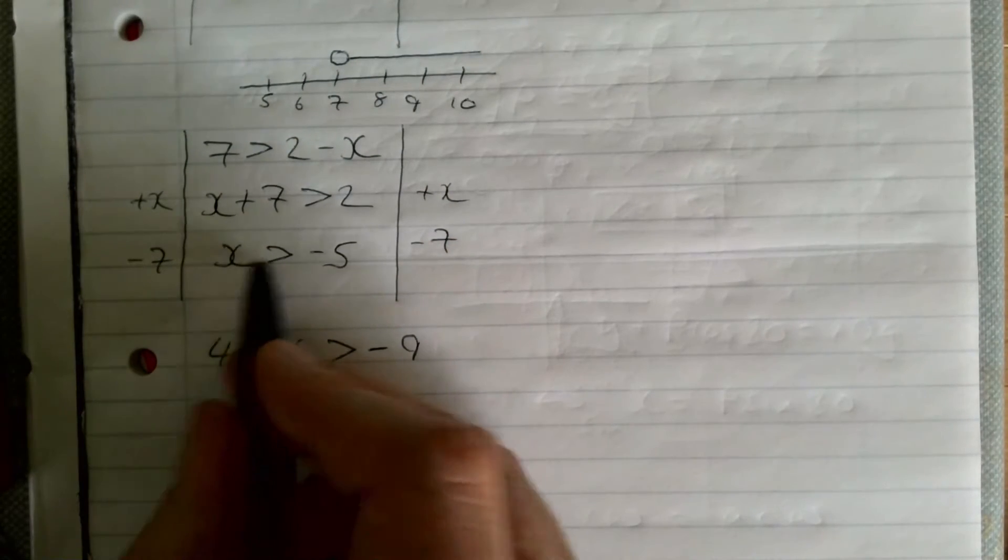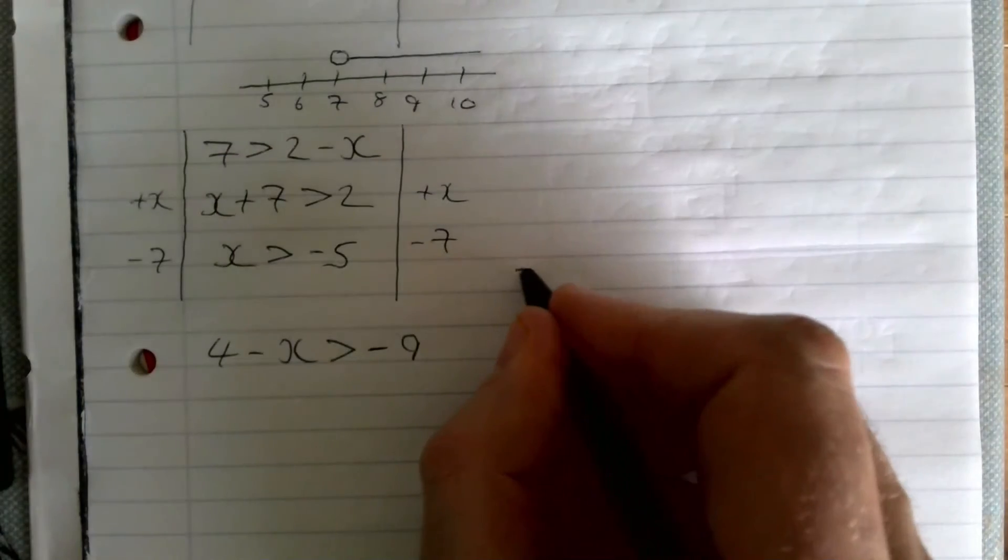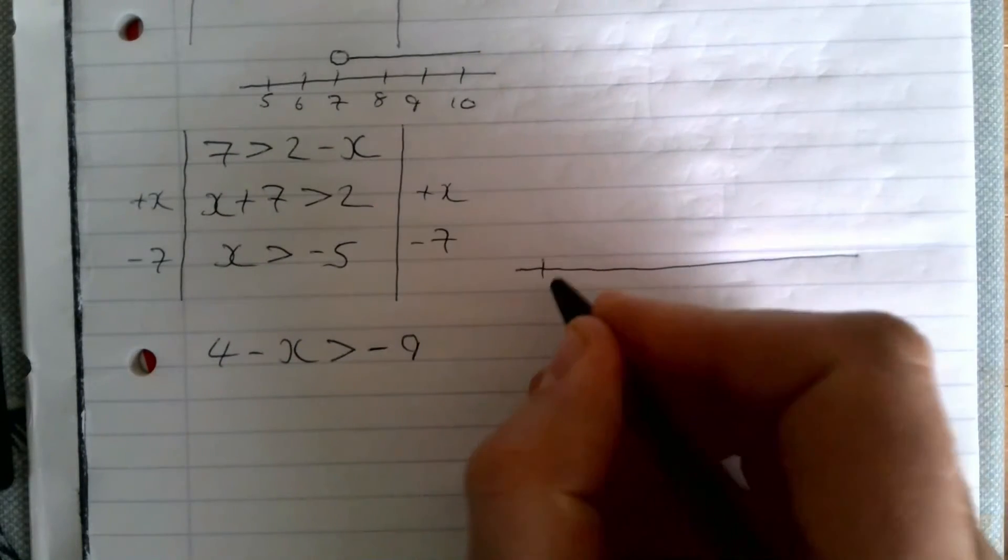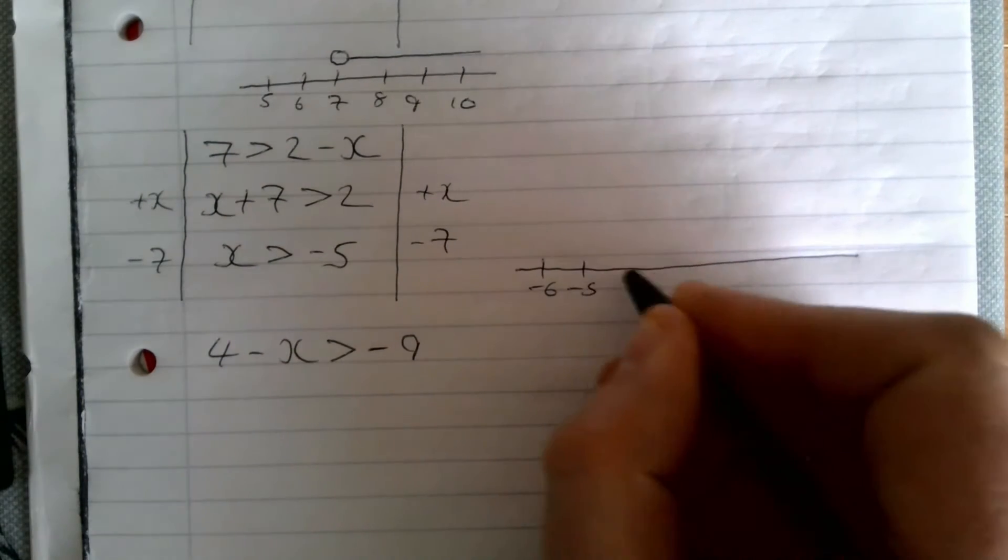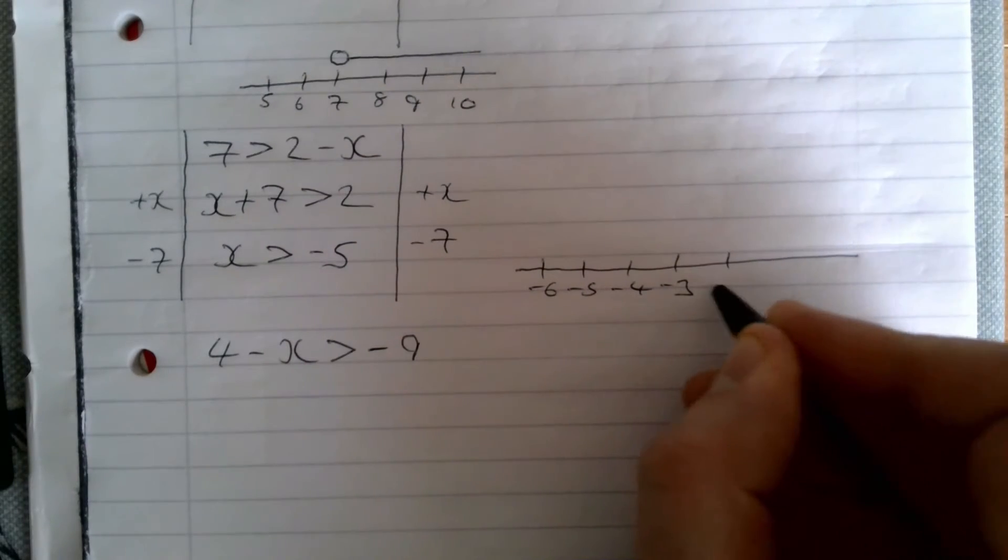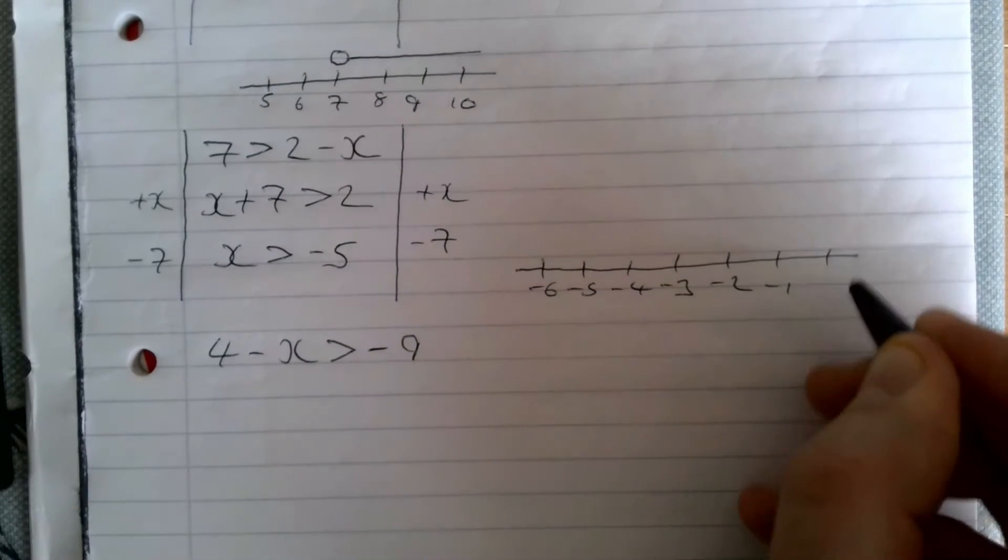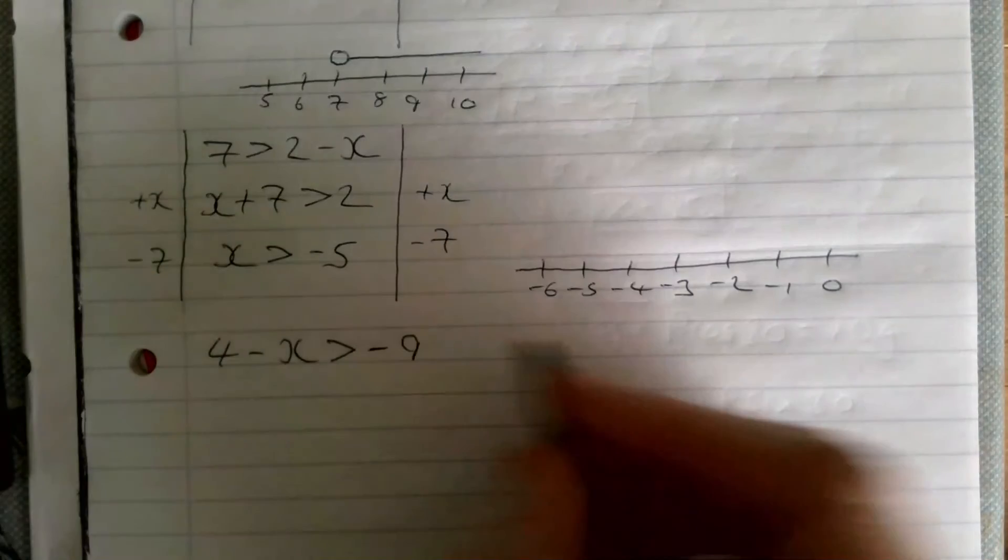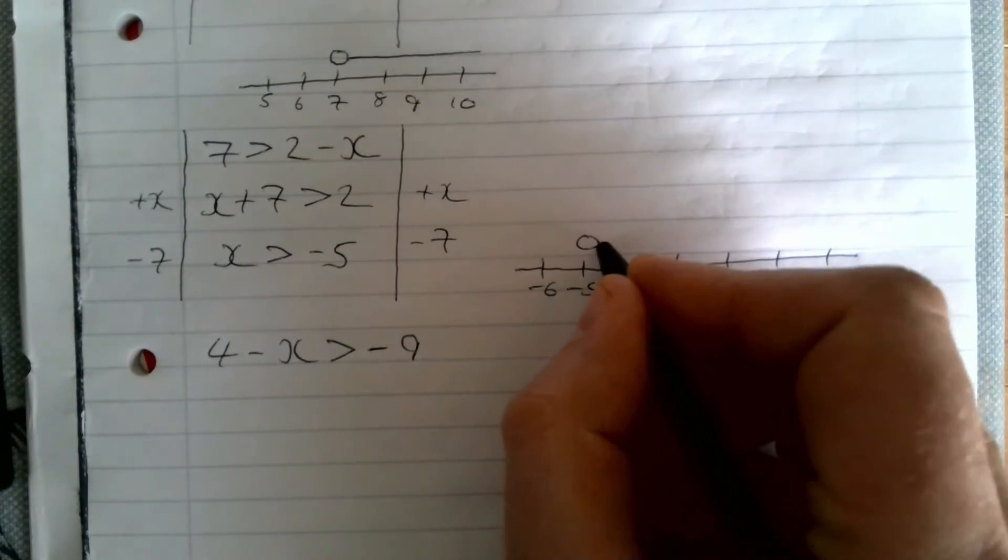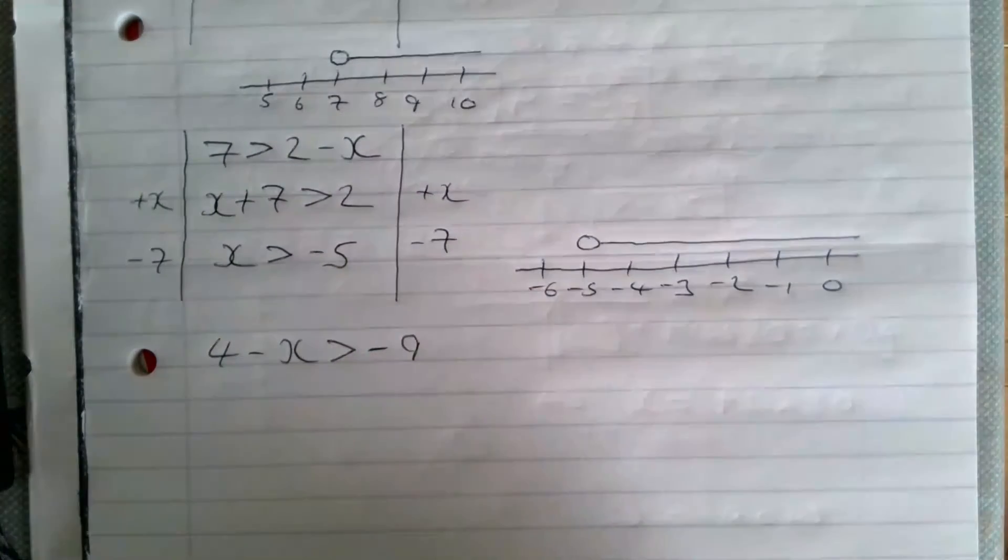To answer that, x is greater than minus 5. If I go minus 6, minus 5, minus 4, minus 3, minus 2, minus 1, 0, x is greater than minus 5. My circle here, and my line down like that.